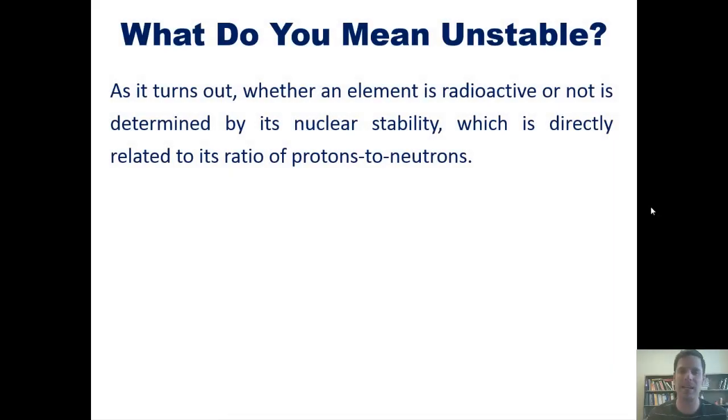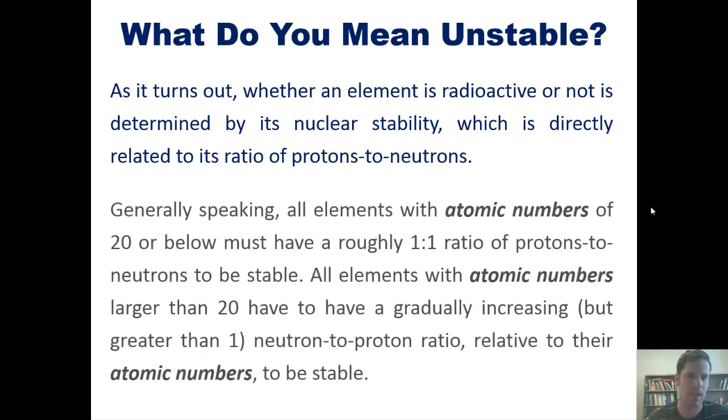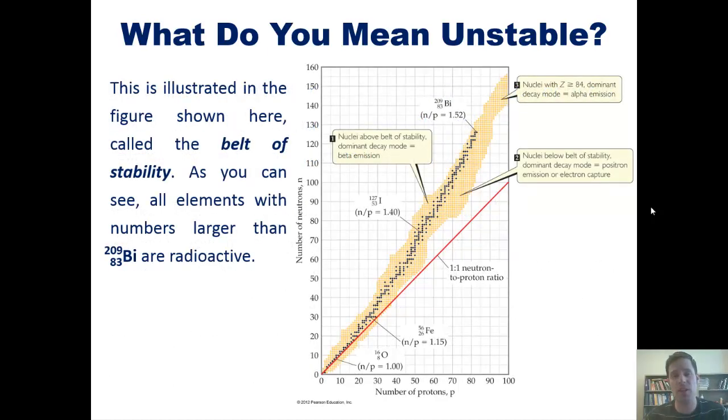As it turns out, whether an element is radioactive or not is determined by its nuclear stability, which is directly related to its ratio of protons to neutrons. Generally speaking, all elements with atomic numbers of 20 or below must have a roughly one-to-one ratio of protons to neutrons to be stable. All elements with atomic numbers larger than 20 have to have a gradually increasing but greater than one neutron to proton ratio relative to their atomic numbers to be stable. This is illustrated in the figure shown here called the belt of stability. As you can see, all elements with numbers larger than bismuth-209, which is way up here, are radioactive.